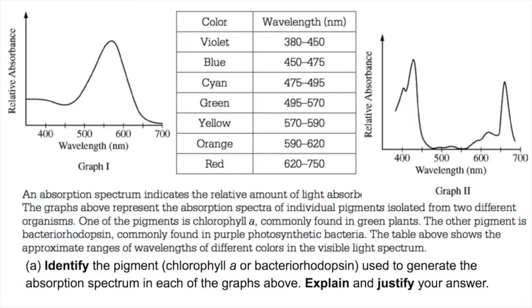Question 2. An absorption spectrum indicates the relative amount of light absorbed. The graphs above represent the absorption spectra of individual pigments isolated from two different organisms. One of the pigments is chlorophyll A, commonly found in green plants. The other pigment is bacteriorhodopsin, commonly found in purple photosynthetic bacteria. The table above shows the approximate ranges of wavelengths of different colors in the visible light spectrum.